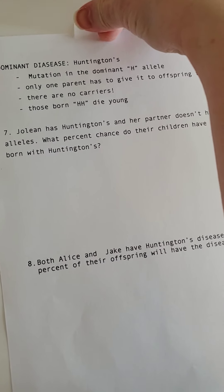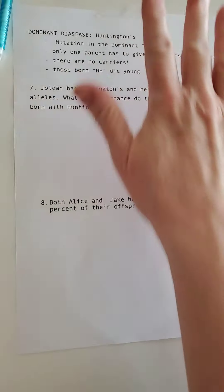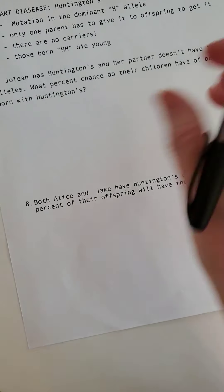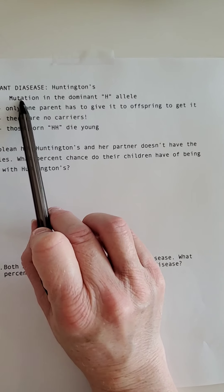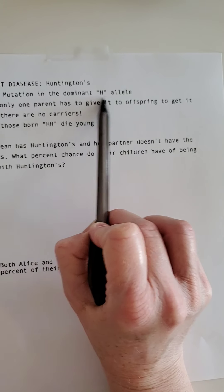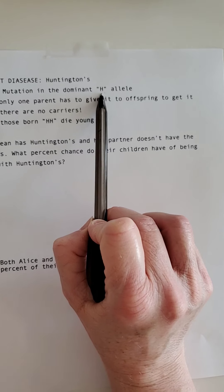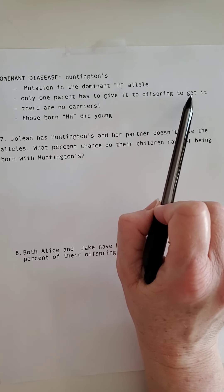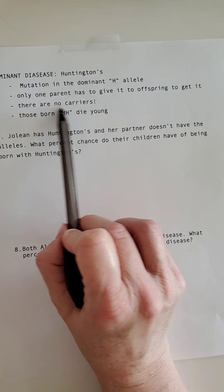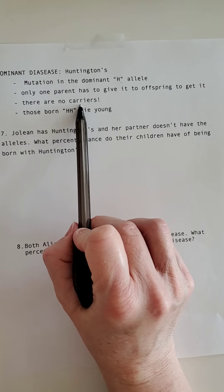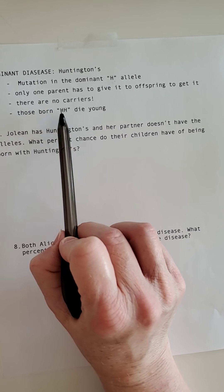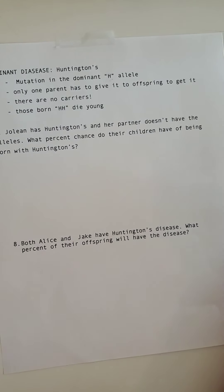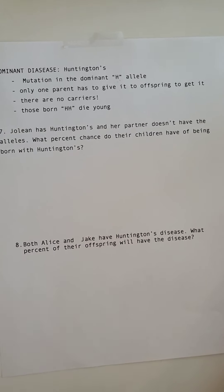Now let's do dominant disease. There's only one dominant disease you have to know: Huntington's. In a dominant disease, the mutation is in the dominant allele. The EOC uses H for Huntington's, named after the first patient. Only one parent has to give it to you to get it. There can be no carriers in a dominant disease. Anyone born HH dies, so anyone alive and having children who has Huntington's is always a heterozygote (Hh).